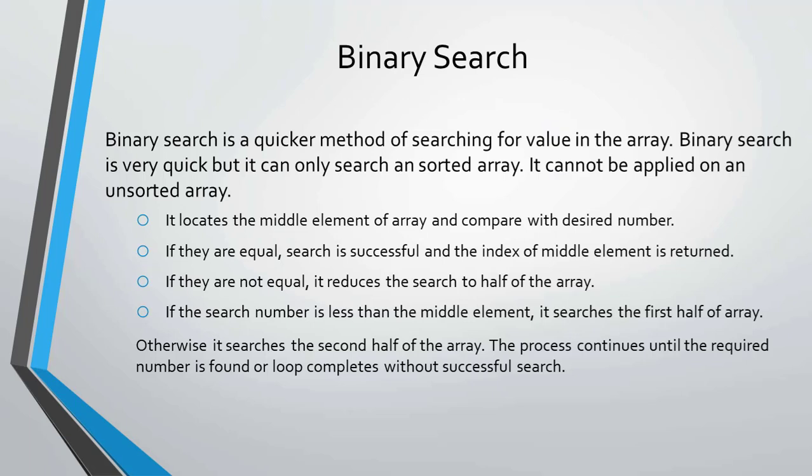Binary search is a quick method of searching for a value in an array. Binary search is quick, but it can only search a sorted array — it cannot be applied on an unsorted array. First step: it locates the middle element of the array and compares it with the desired number. If they are equal, the search is successful and the index of the middle element is returned. If they are not equal, it reduces the search to half of the array. If the search number is less than the middle element, it searches the first half; otherwise, it searches the second half. The process continues until the required number is found or the loop completes without a successful search.